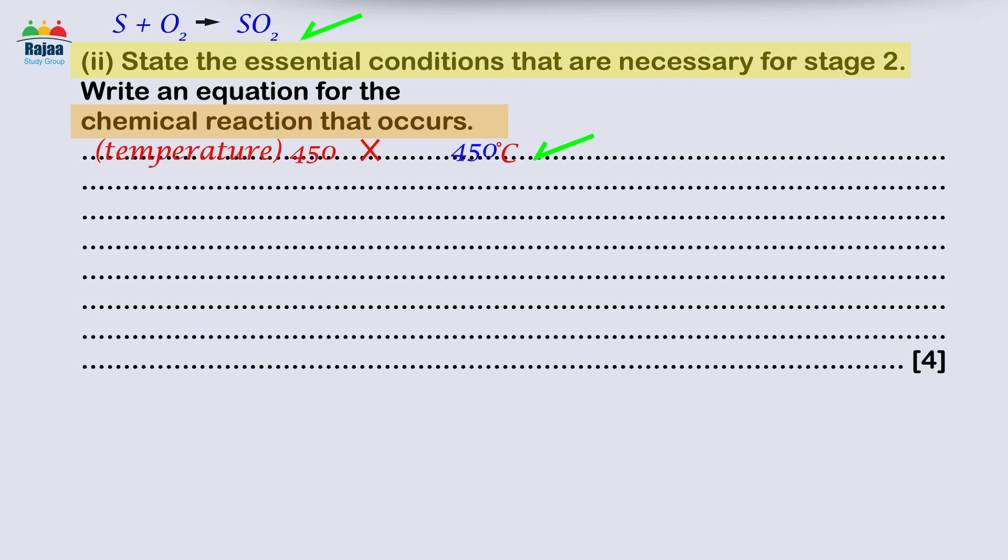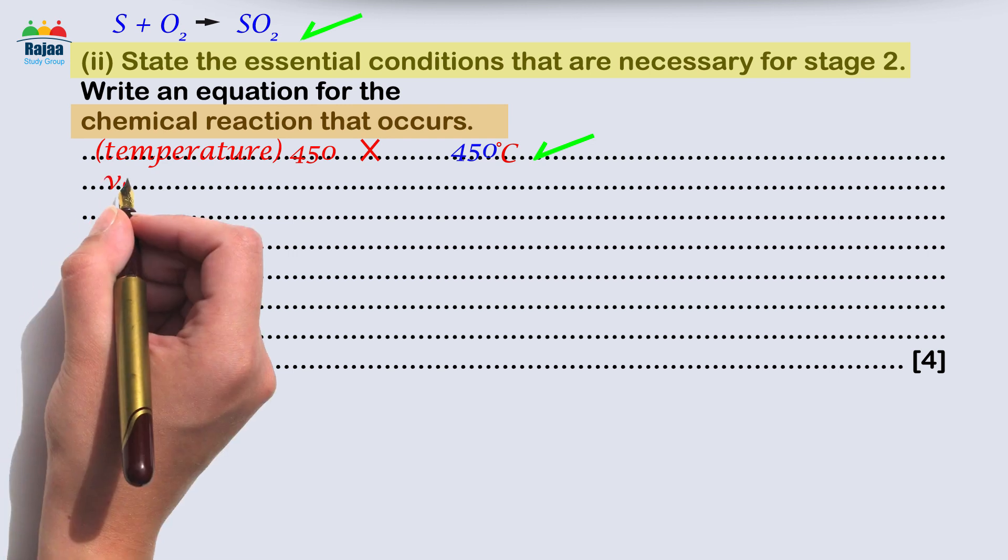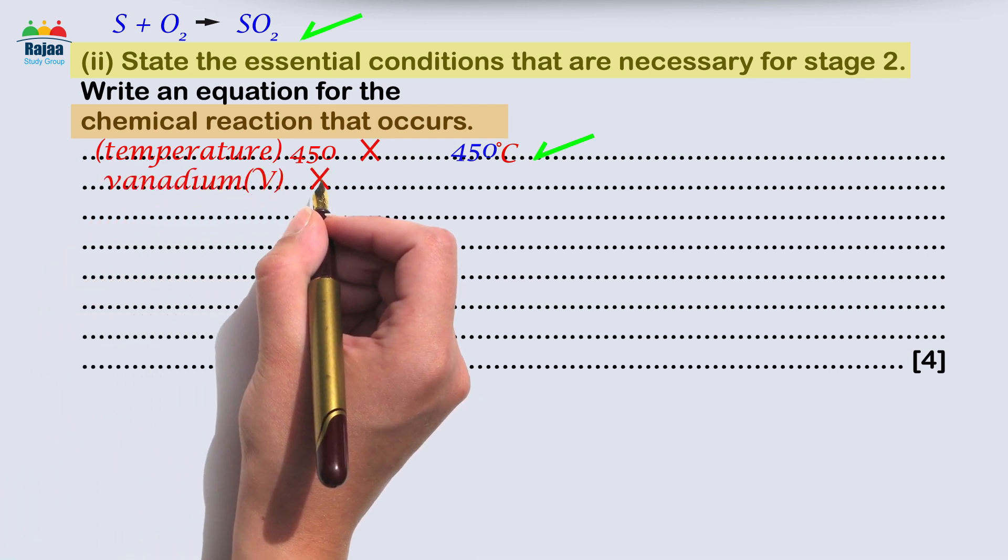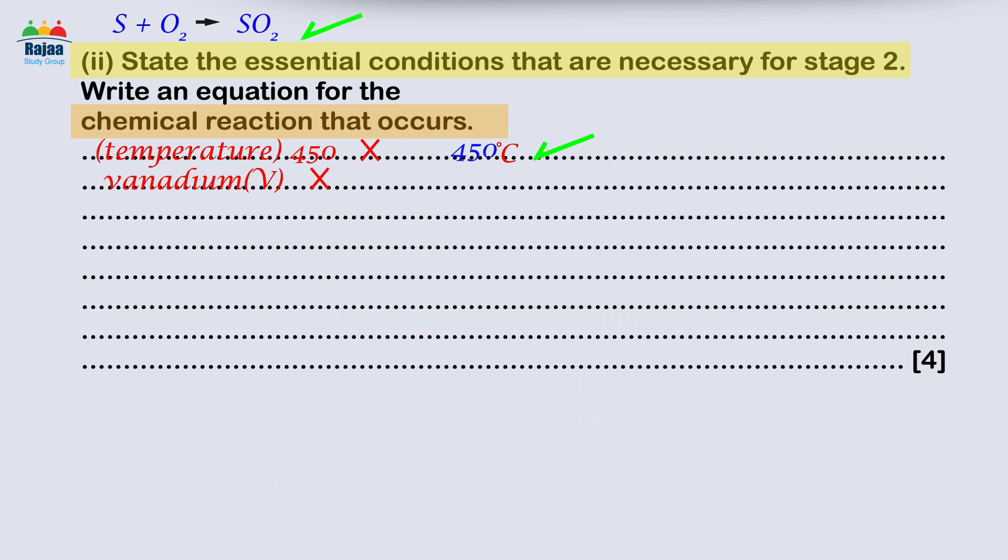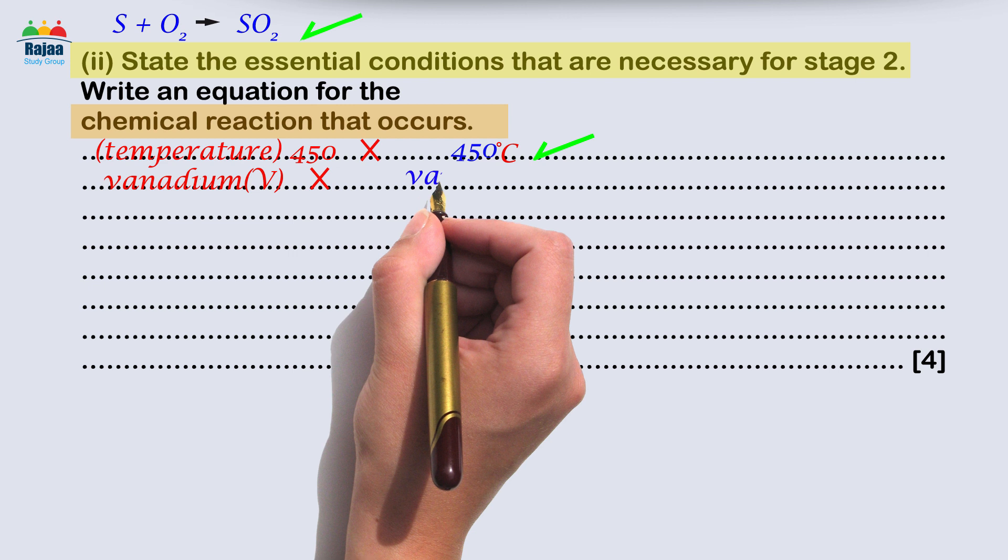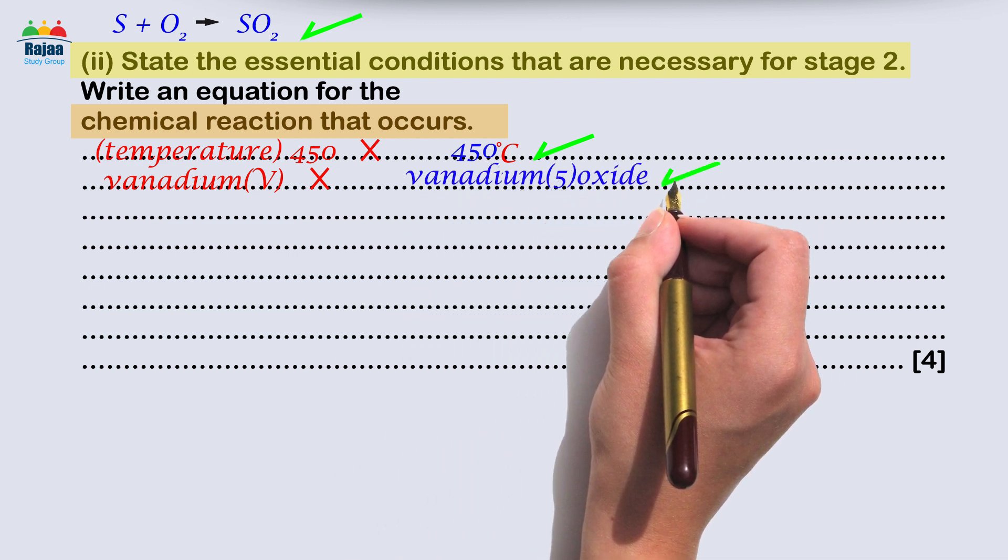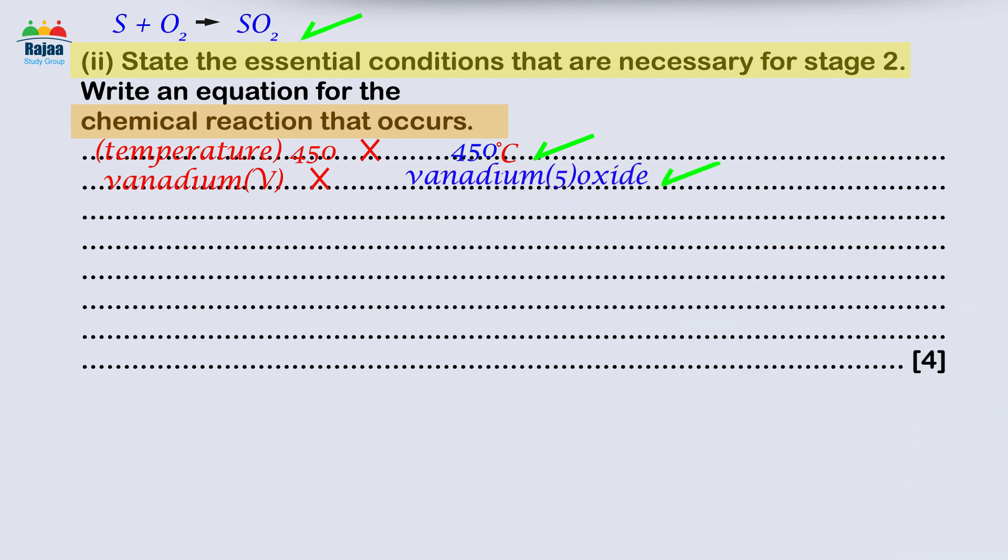Some students received failing grades because they failed to mention the catalyst and did not write it correctly. Vanadium V - no, mentioning the catalyst's name like this was an incorrect answer. Therefore, in order to state the catalyst name, you must include oxide. Alternatively, you can write the formula of the ionic compound vanadium like this: V2O5.